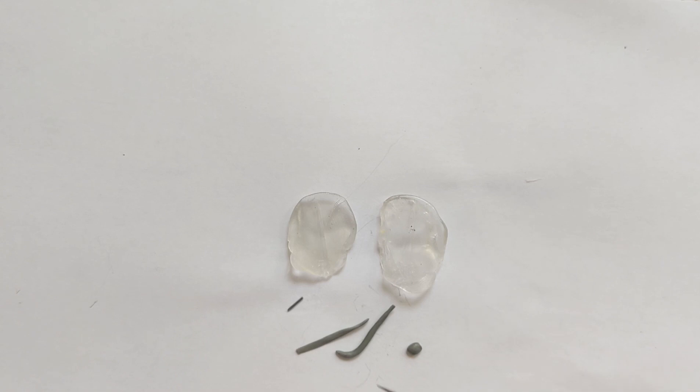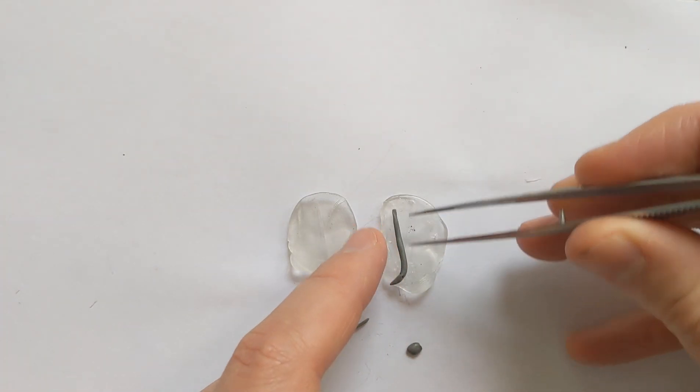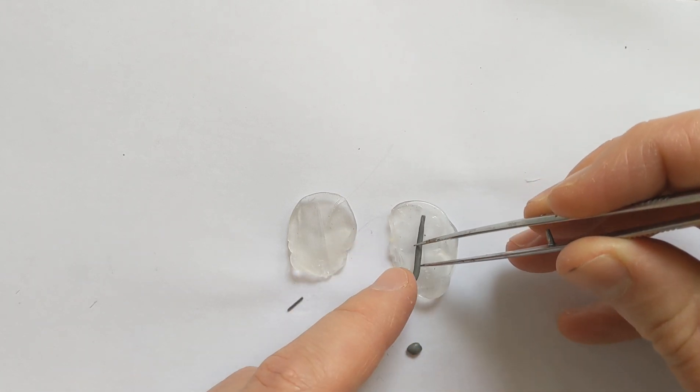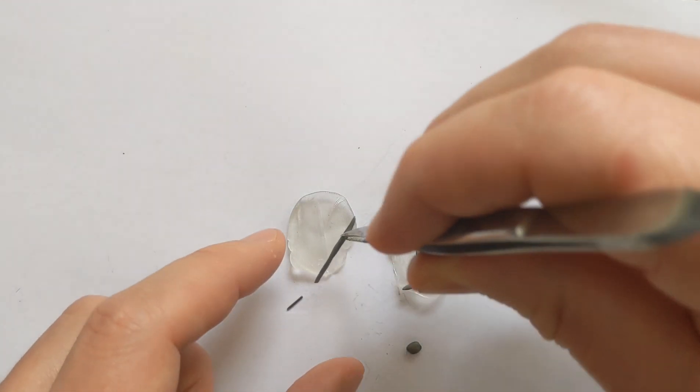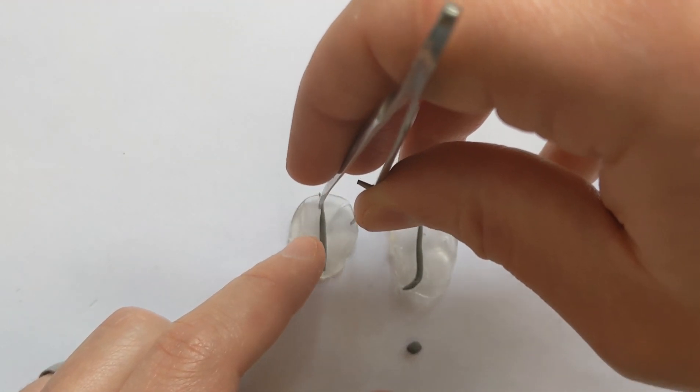Modelling putty can always be a bit sticky, so using some tools to move it around is useful. A bit of water can be helpful if you find it is sticking. Fill the moulds and then we will squeeze the two halves together.